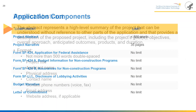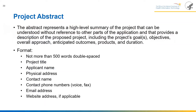The project abstract represents a high-level summary of the project that can be understood without reference to other parts of the application, providing a description including goals, objectives, overall approach, anticipated outcomes, products, and duration. Format: no more than 500 words, double-spaced. Include the project title, applicant's name, physical address, contact name, contact phone numbers including voice or fax, email address, and website address if applicable.